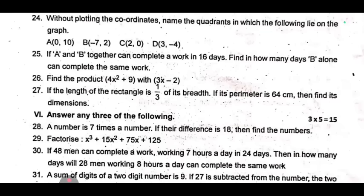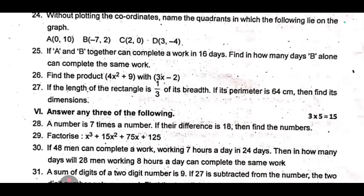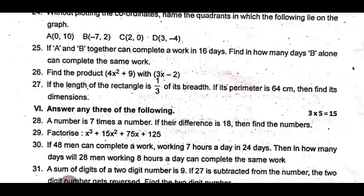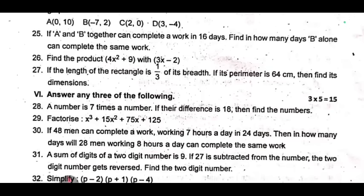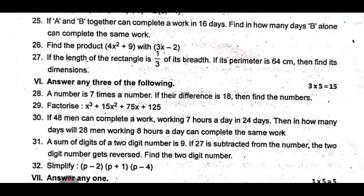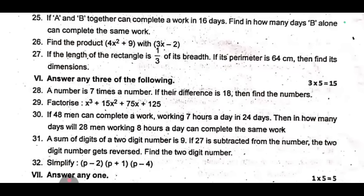Answer any 3. Question 28: A number is 7 times a number. If their difference is 18, then find the numbers. Next, factorize x³ + 15x² + 75x + 125. Question 30: if 48 men can complete work in 7 hours a day in 24 days, then in how many days will 28 men working 8 hours a day can complete the same work.